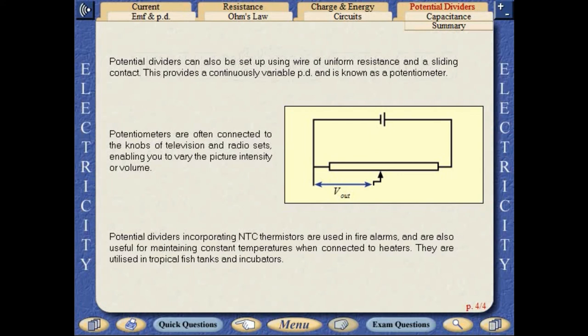Potential dividers incorporating NTC thermistors are used in fire alarms and are also useful for maintaining constant temperatures when connected to heaters. They are used in tropical fish tanks and incubators.